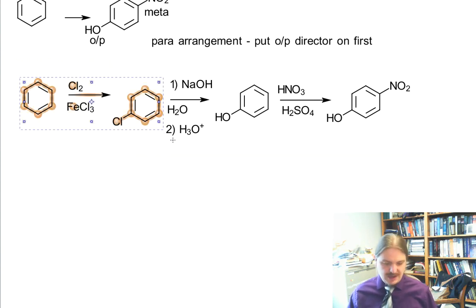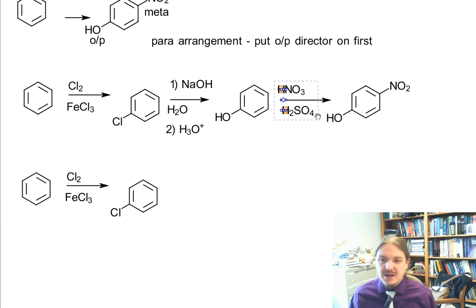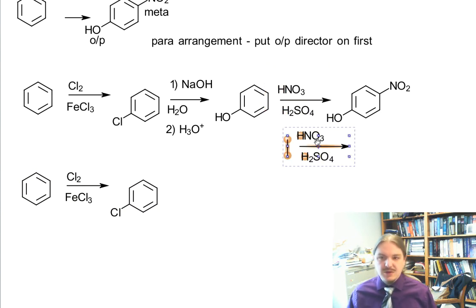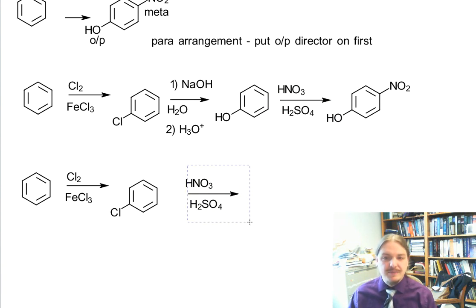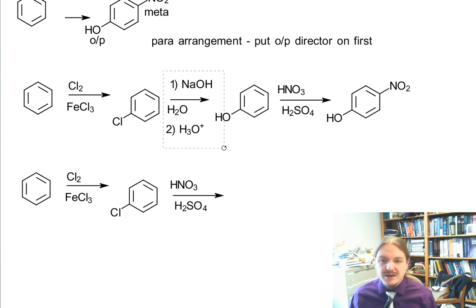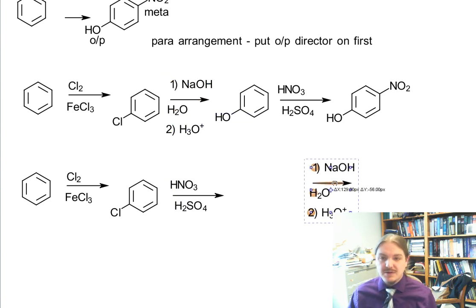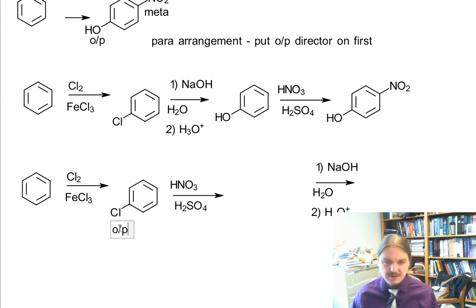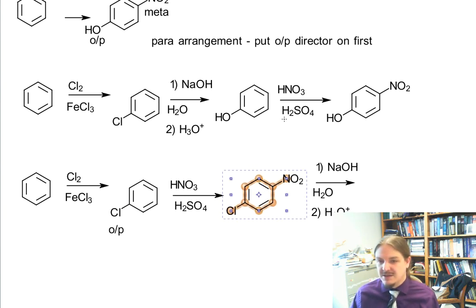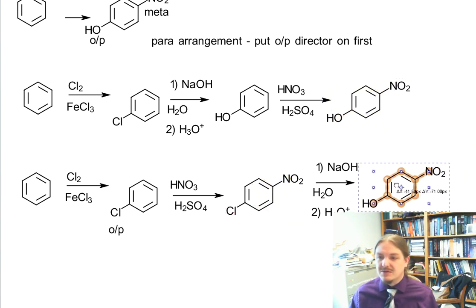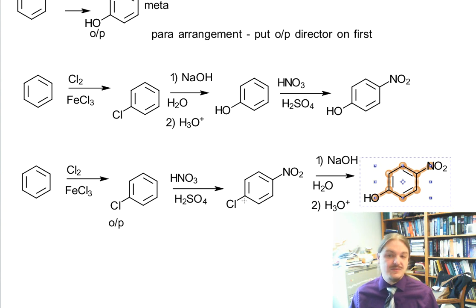What if we did the first one as shown, but what if we swapped the order of the nitration and the nucleophilic aromatic substitution? Would we get a different outcome if we did it that way? So chlorine is an ortho para director. So we would expect to get more para nitro than ortho nitro. And then it turns out that we would still expect para chloro nitro benzene to react with sodium hydroxide and water to generate para nitro phenol. So sometimes we can switch around the order of reactions and still get the same product. Sometimes we can't.